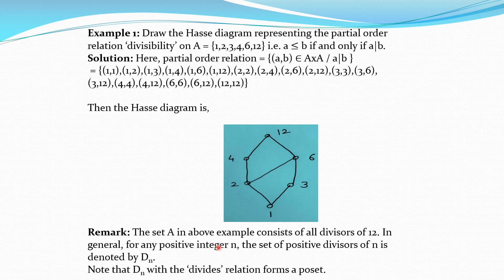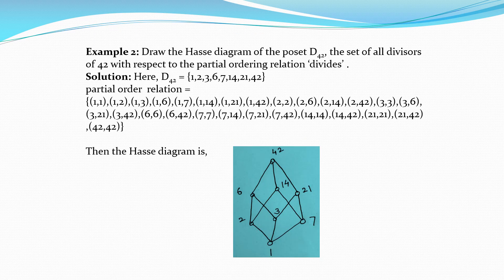The set A in the above example consists of all divisors of 12. In general, for any positive integer n, the set of positive divisors of n is denoted by D(n). So this set is the set of all positive divisors of 12, which we can also denote D(12). Note that D(n) with the divides relation forms a poset. The next example asks to draw the Hasse diagram of the poset T(42), the set of all divisors of 42 with the divisibility relation. T(42) contains 1, 2, 3, 6, 7, 14, 21 and 42.